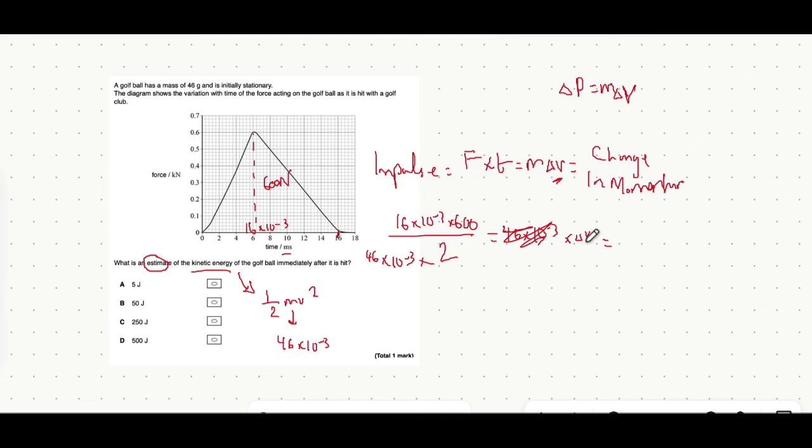Whatever that change in velocity is, that's what we use as the velocity here. Because it's going from stationary to that velocity, if that makes sense. So once you have that velocity value, you multiply a half times the mass by that velocity value that you just found, all squared.